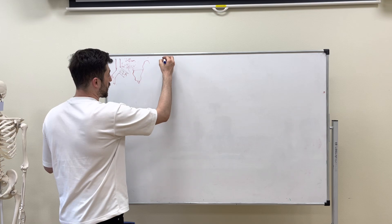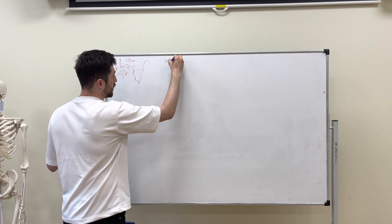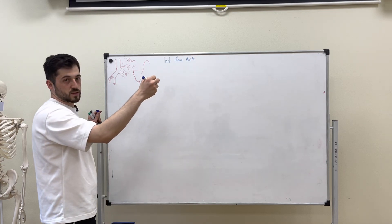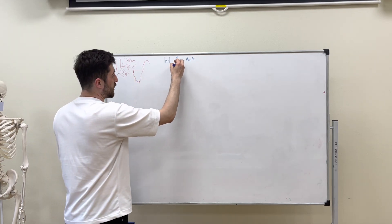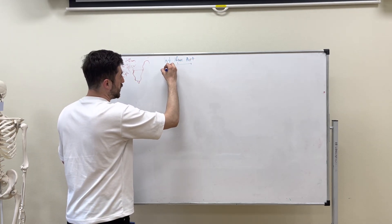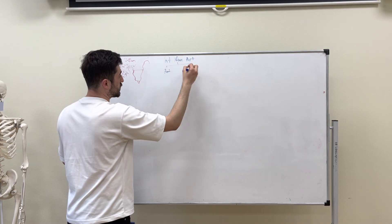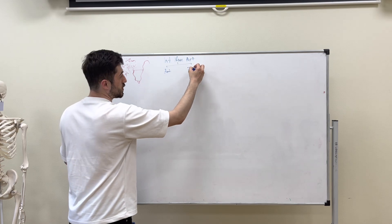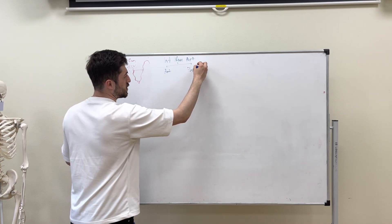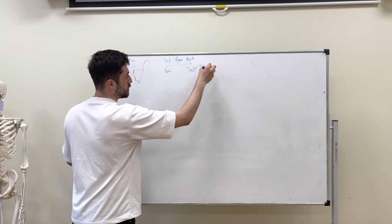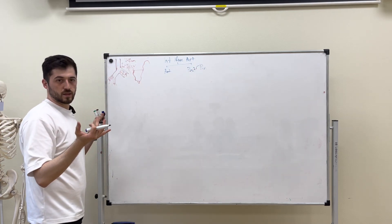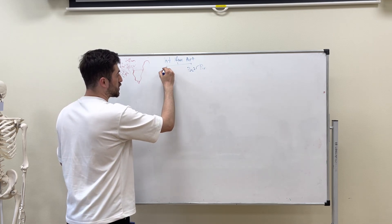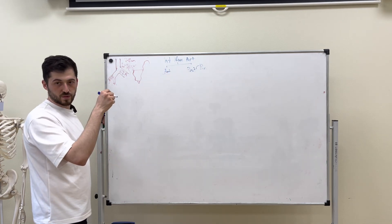The internal iliac artery has two trunks. It divides into the anterior trunk and the posterior trunk. The posterior trunk has several branches to the wall of the iliac bone and pelvic walls. The anterior trunk gives blood mostly to the pelvic organs.